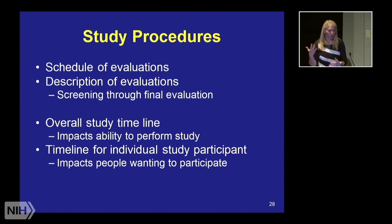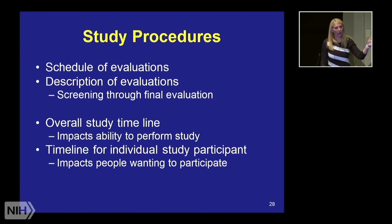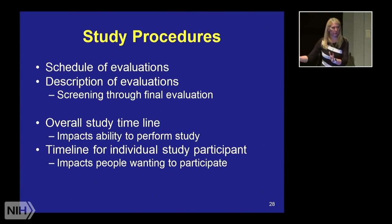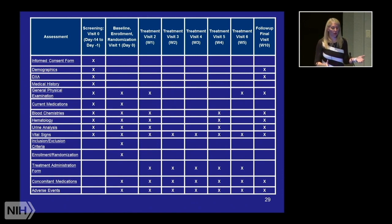One of the elements you include is a schedule of evaluation: how many study visits are needed and what happens at each visit from screening through the final study visit. It's helpful to have an overall timeline — when to start recruiting, how many participants to recruit monthly or weekly to finish in time to follow up all participants. There are two levels: the overall study timeline and the individual participant timeline, best presented as a table or graphic.